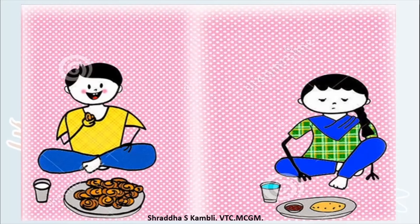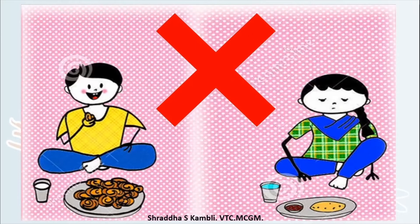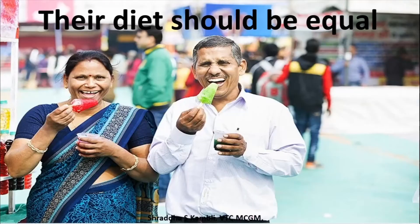Look at this picture and tell me — is it right or wrong? The boy has a plate full of food and milk in his glass, but the girl has just one roti, a little sabji, and water. This is totally wrong. If you see this happening around you, raise your voice and say this is wrong. Boys and girls should get equal diet, and when a man eats something, the woman should also be allowed to eat the same.